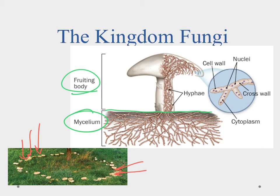The fruiting body is where they produce spores, which are released to grow and spread their populations over areas. The mycelium underneath is what we don't see — it spreads out and that's how the organism grows. One interesting thing is when bread mold gets into a loaf of bread, the mycelium might spread throughout the entire bread, even though you only see a little bit of the mold on the surface — that's the fruiting body getting ready to reproduce. The fungi is a diverse group and the lessons will go into more detail.